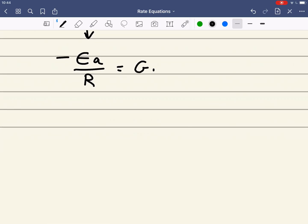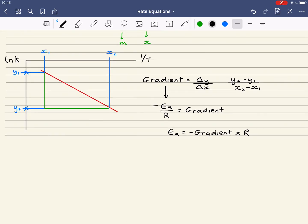Now, if I want to work out then my activation energy, it's therefore, if I rearrange that, it's minus gradient times R. And because this gradient is negative, you'd get a negative value for this gradient. That negative value for the gradient and this negative would cancel to give you a positive activation energy.